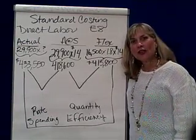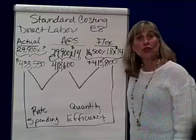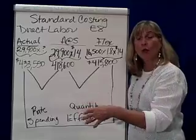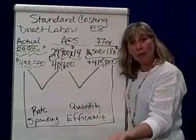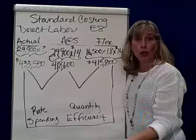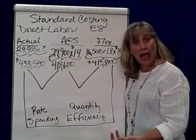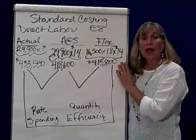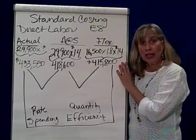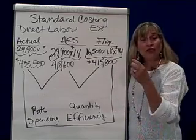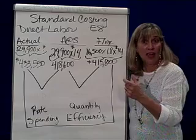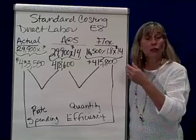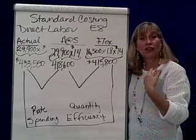Standard costing. The second variance we're going to look at has to do with direct labor. We're going to look at what our actual costs are — how many hours the workers actually worked and what labor rate we actually paid them. That gives us actual. We're going to compare that with the flexible budget, which is the actual output times the standard hours you expect it to take, times the standard rate — what you projected at the beginning of the year to pay labor.